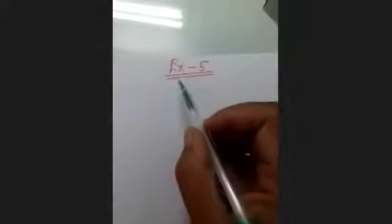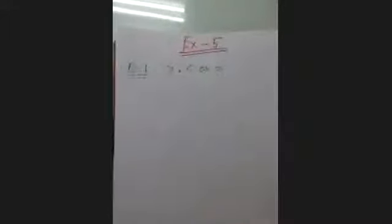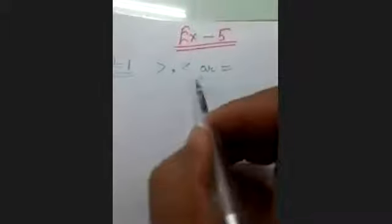Good morning students. As you know, we're doing the second unit, that is Number System. In this lecture we'll discuss Exercise Five. We'll compare large numbers and put the appropriate symbol: greater than, less than, or equal to.